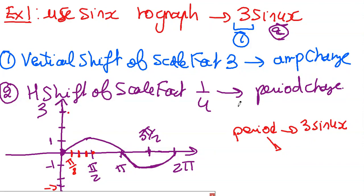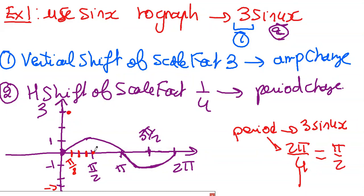The horizontal compression means the period is π/2. Dividing π/2 into four equal parts gives π/8 each. So the particular x-values are π/8, 2π/8 (=π/4), 3π/8, and 4π/8 (=π/2). The vertical stretch means the maximum is at 3 and the minimum is at -3. The purple graph is the original sine x with period 2π; the new function 3sin(4x) has amplitude 3 and period π/2.